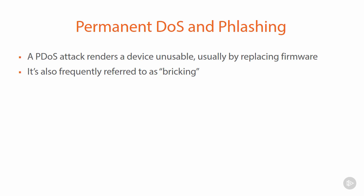The trick for the attacker with a permanent DOS attack is to exploit a weakness in that target device, which allows them to load the malicious software. Now that may be a drive-by download — something that's downloaded as someone browses to a web page — or it may be a malicious update they coerce someone into downloading.